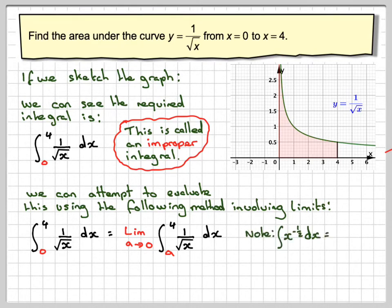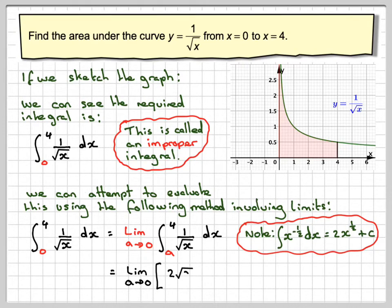Note that if you were to integrate x to the minus 1 half, which is what 1 over root x is, that it becomes 2x to the half plus c. So this becomes the limit now as a goes to 0 of 2 times the square root of x. That's what x to the half is. And we now put the limit a and 4 at the end.